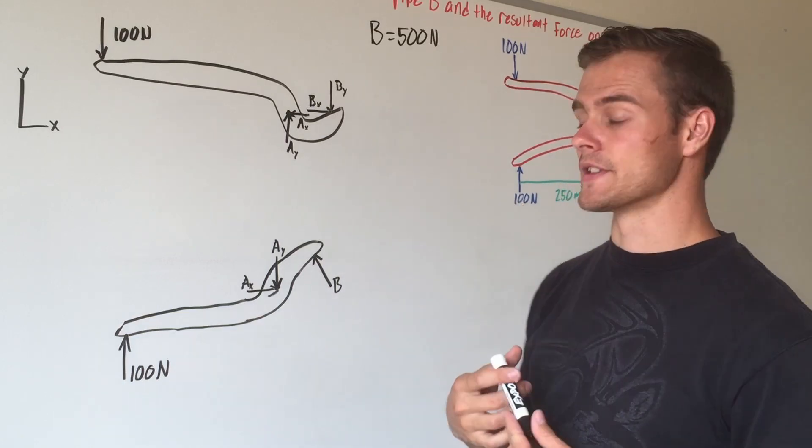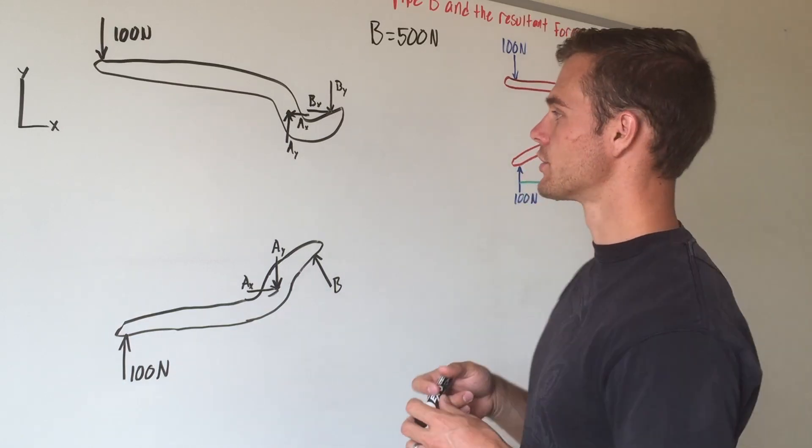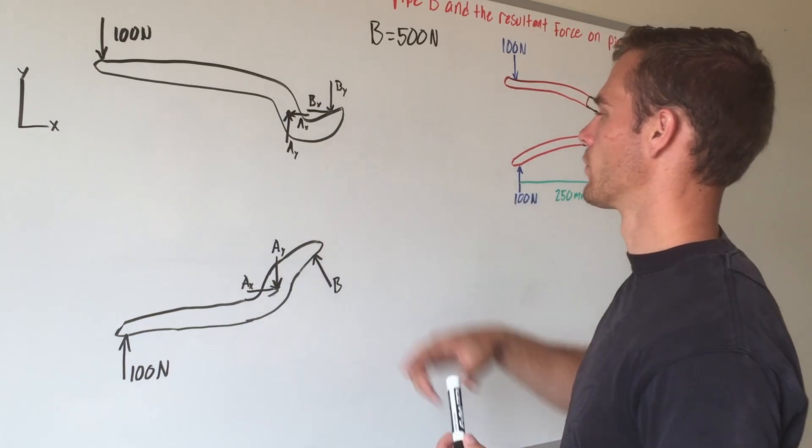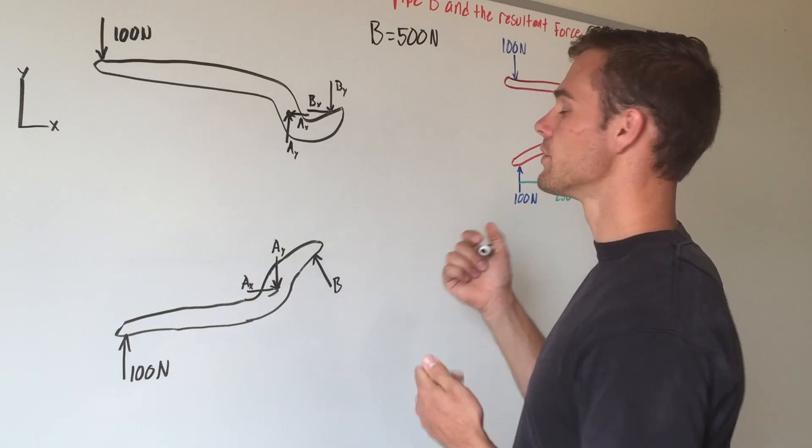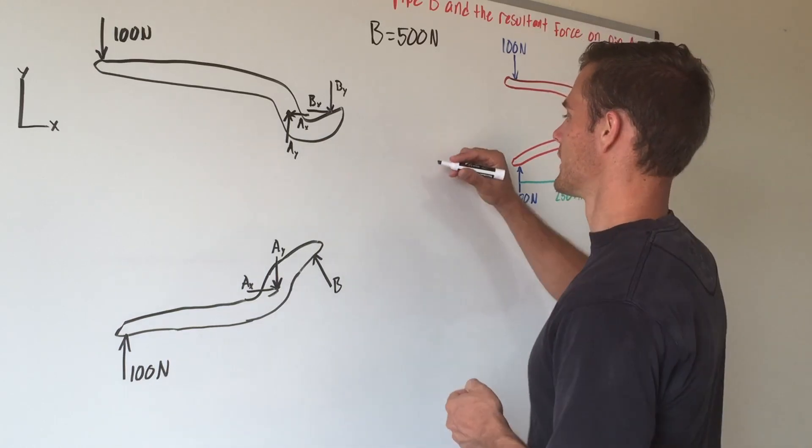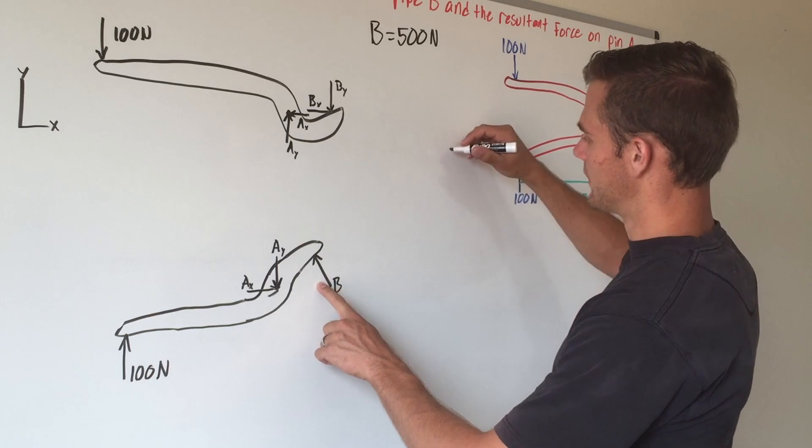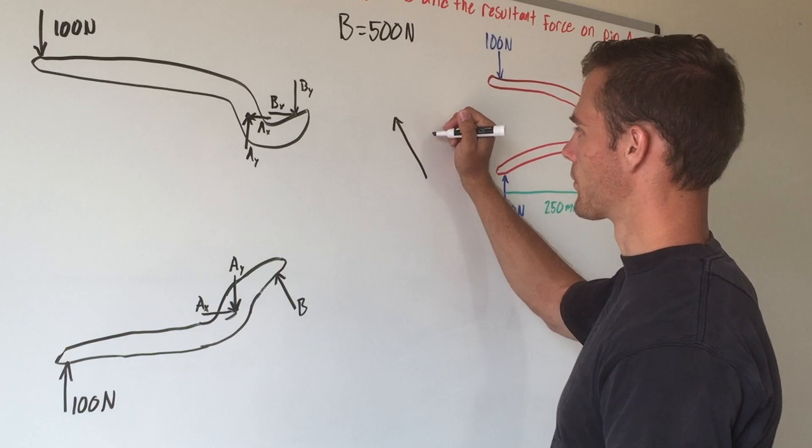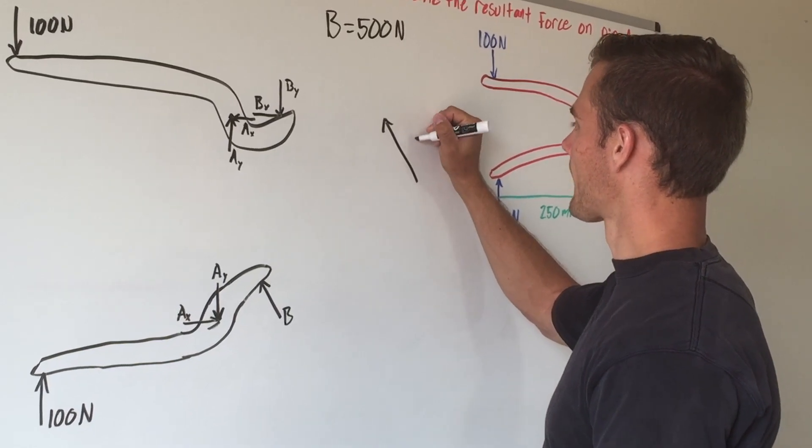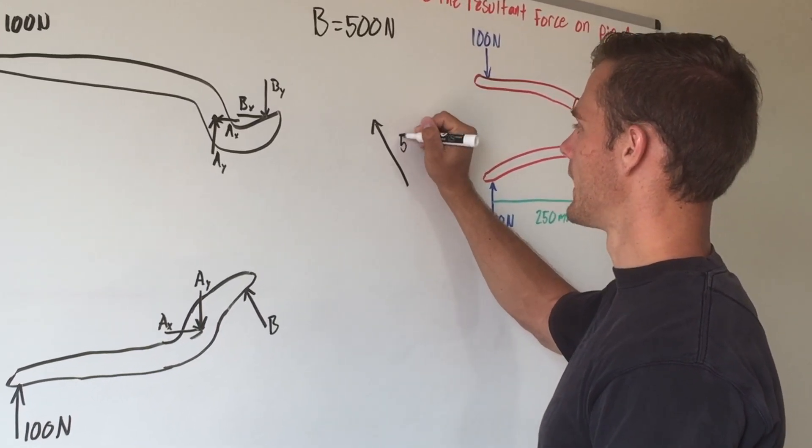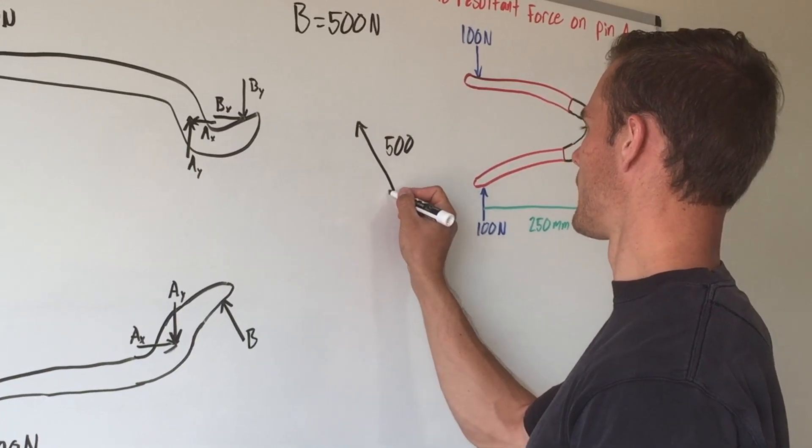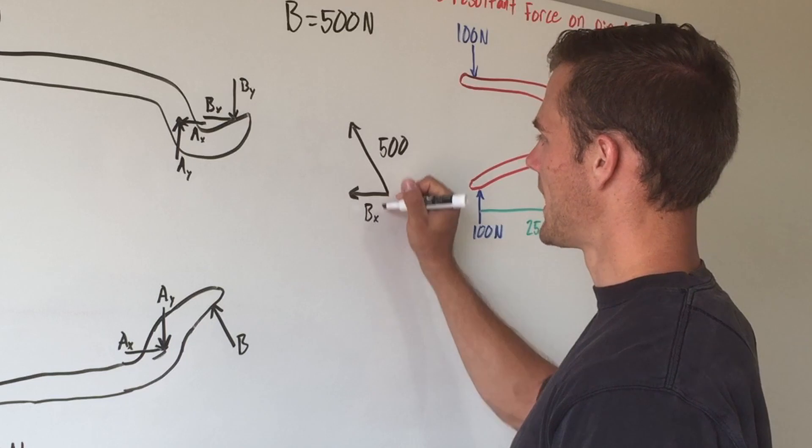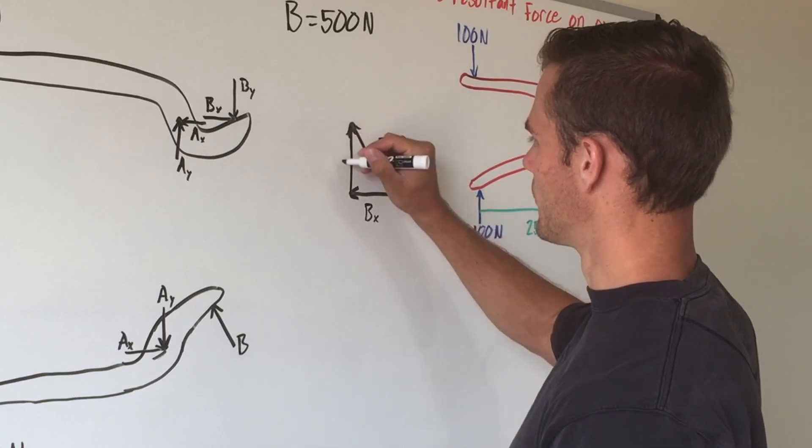And so now that we have our force B, we can do some of the forces in the x and y directions to solve for our other forces here. But we need B to put it into its x and y components, and we can do that using vector addition. And if we use this direction of B, we'll say that this is the hypotenuse of a right triangle. And this side, our hypotenuse, is 500 newtons, and this will be B sub x and this is B sub y.